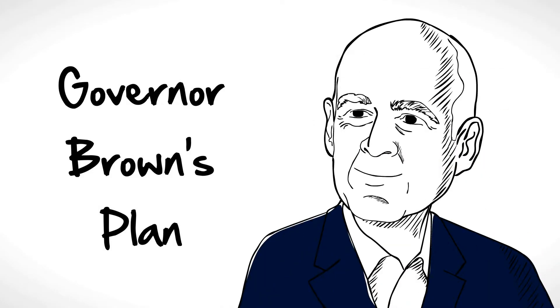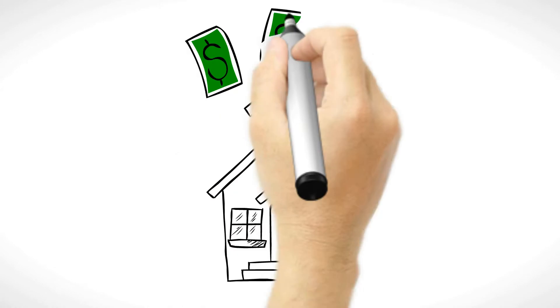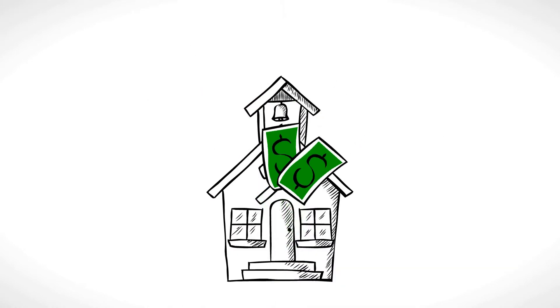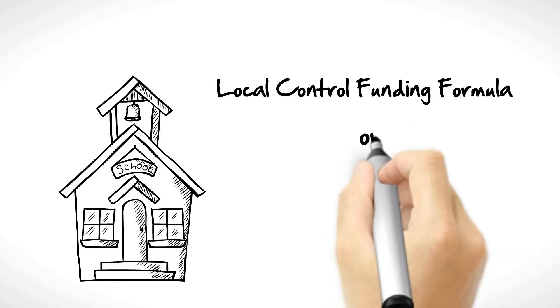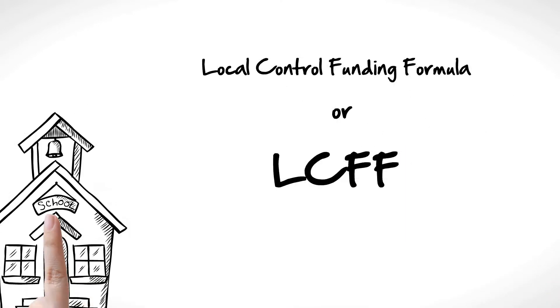The governor has a plan to fix these funding problems. He wants to improve the way we fund schools. The plan is called Local Control Funding Formula, or LCFF. The plan does the following.